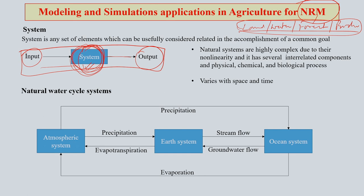What we try to do is to mimic what is happening in nature. However, it is almost impossible to mimic or copy exactly what is happening in nature, so our effort is always to go as close as possible. That is why this field is one of the most dynamic and progressive fields — every day something new is happening. Natural systems are very complex, especially when working with natural resources, due to non-linearity and several interrelated components.